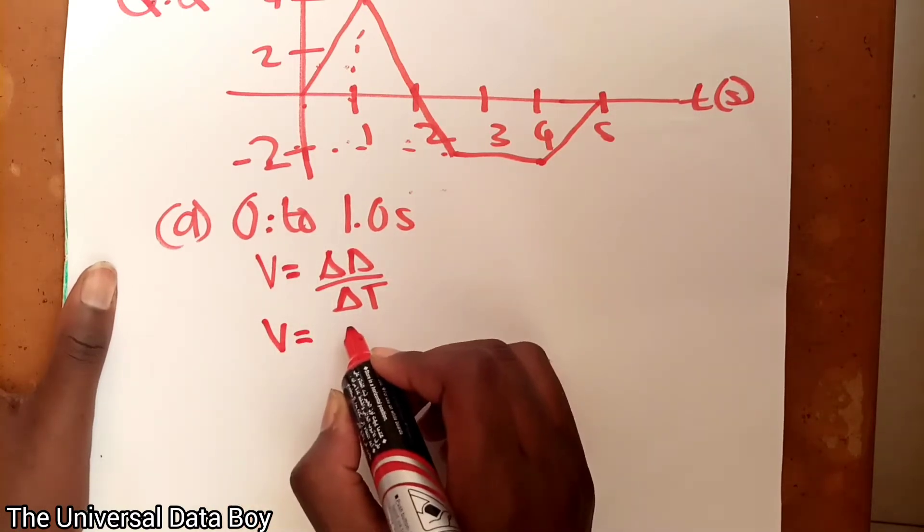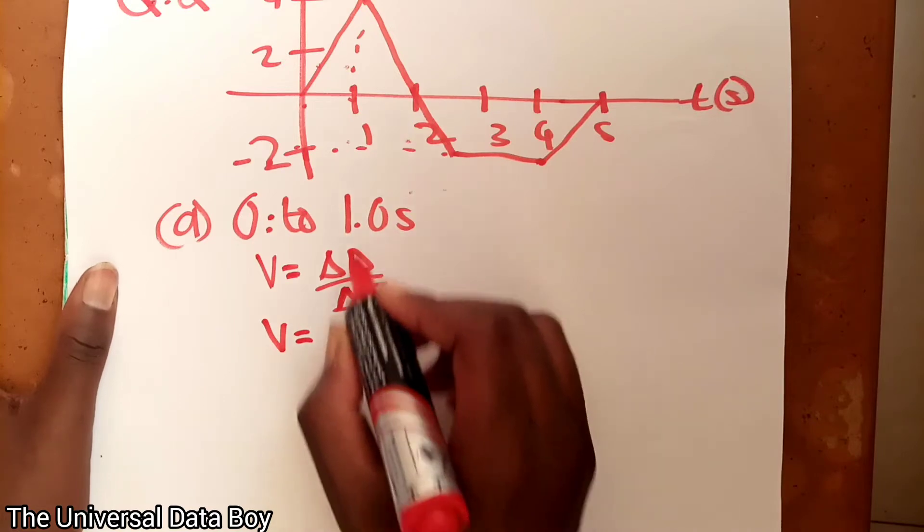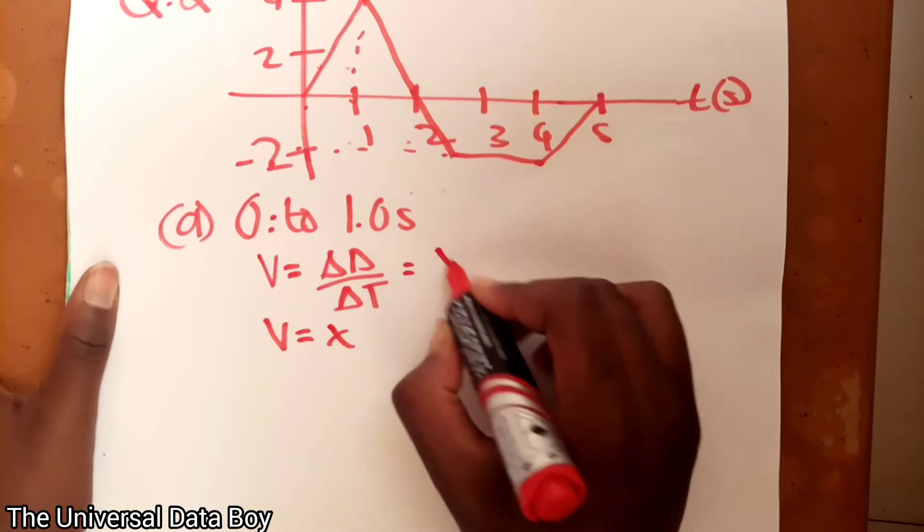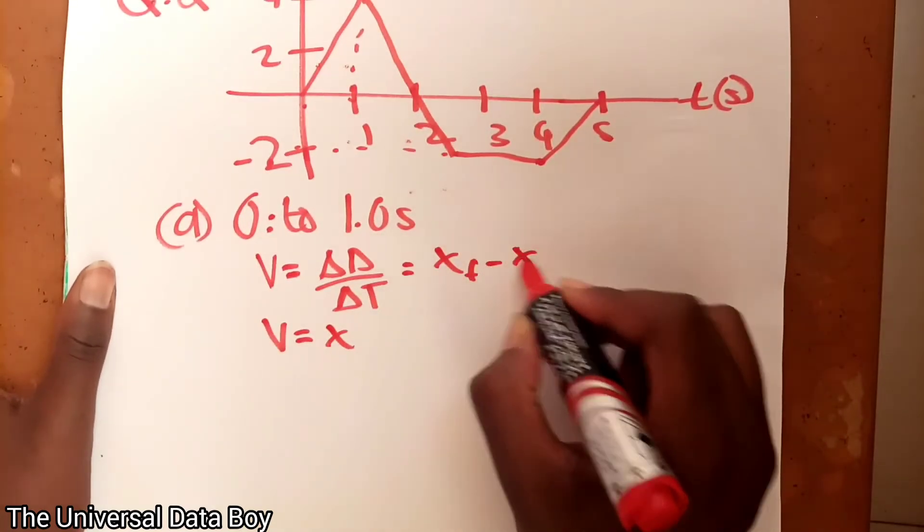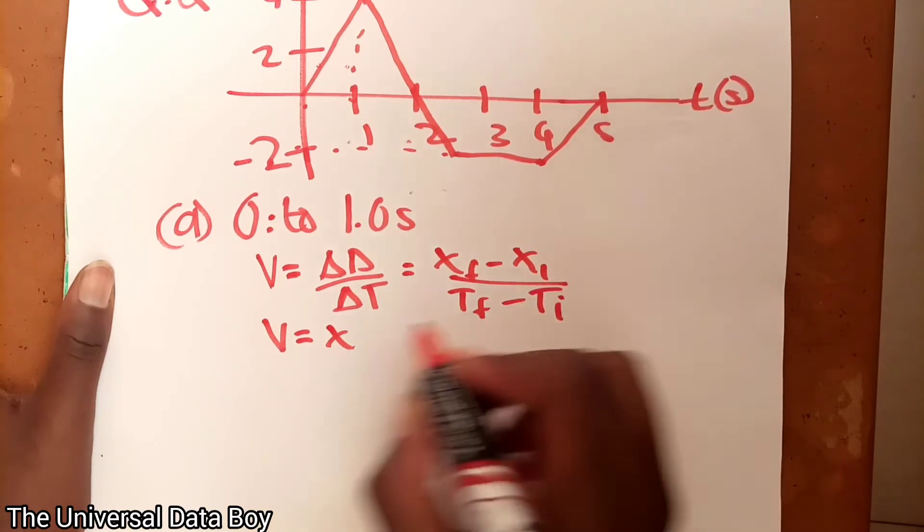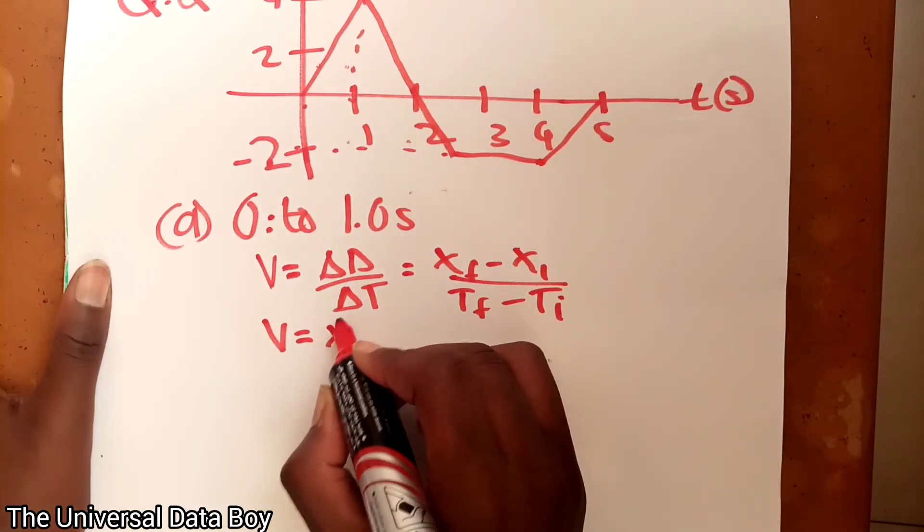Velocity is going to be given by the change in distance, which is distance final minus distance initial over time final minus time initial. So the distance, the distance final is 4